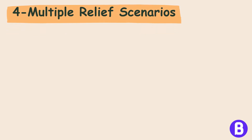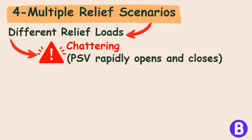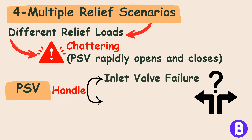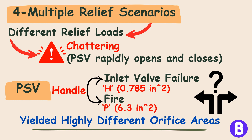Factor 4: Multiple Relief Scenarios. Various relief scenarios can lead to different relief loads on a PSV. If not managed properly, this can result in chattering — a condition where the PSV rapidly opens and closes. Suppose we have a PSV that should handle two scenarios: one for inlet valve failure and the other for fire. When calculating the orifice area for each scenario, they yielded highly different orifice areas. For instance, an inlet valve failure might require an orifice size designated as H (0.785 in²), while an external fire scenario might necessitate a much larger P designation (6.3 in²). This disparity presents a dilemma.